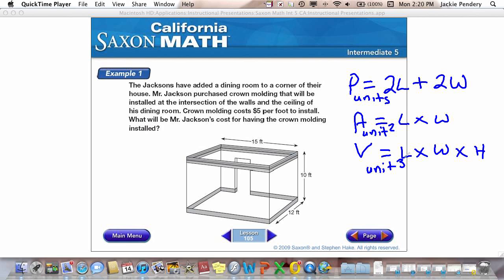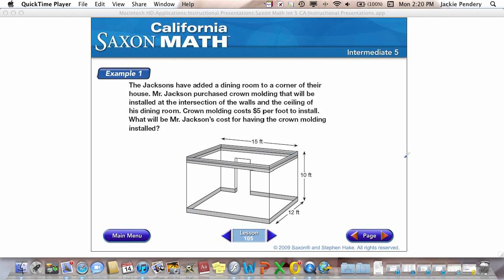Okay, so now that you have those written down, let's go ahead and look at example number one. The Jacksons have added a dining room to a corner of their house. Mr. Jackson purchased crown molding that will be installed at the intersection of the walls and the ceilings of his dining room. Crown molding costs $5 per foot to install. What will be Mr. Jackson's cost for having the crown molding installed? So in this, I am finding the perimeter.